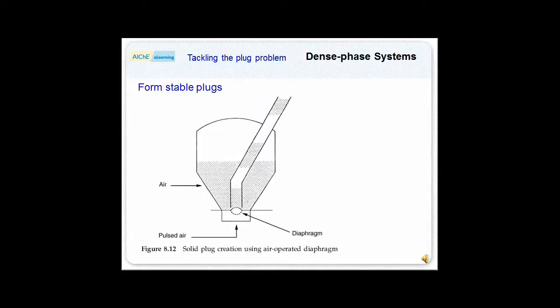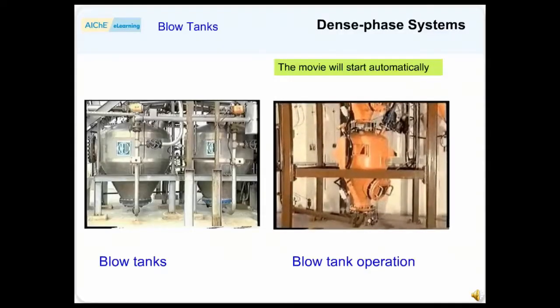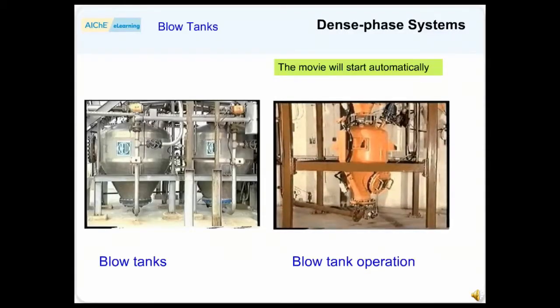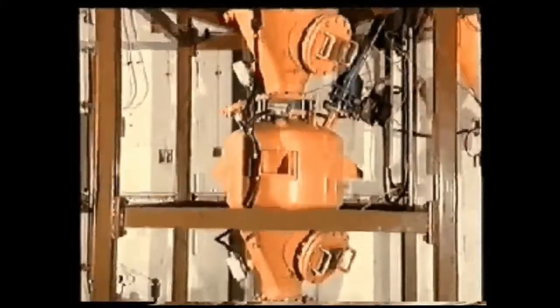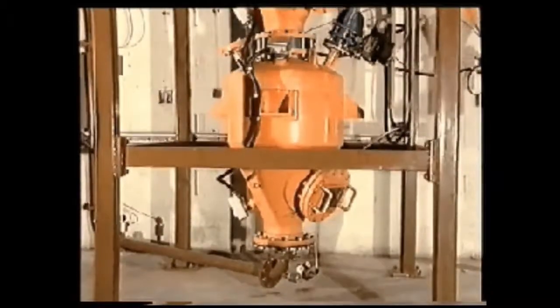Let's take a closer look at the various types of blow tank. The upper vessel is a lock hopper in which the solids are pressurized. The valve between the lock hopper and the blow tank opens, allowing solids to charge the blow tank.